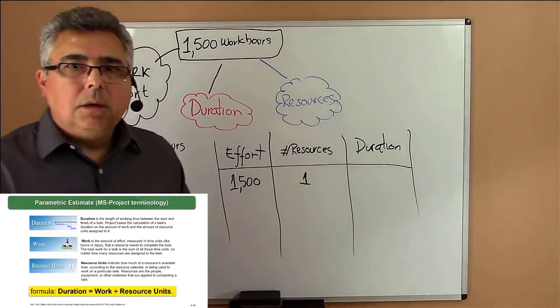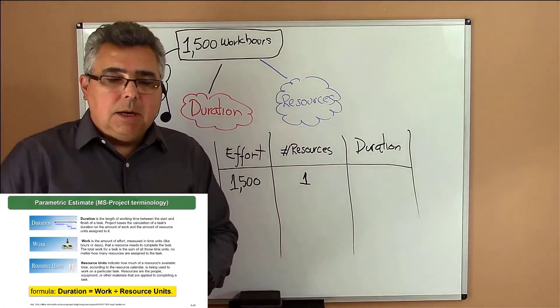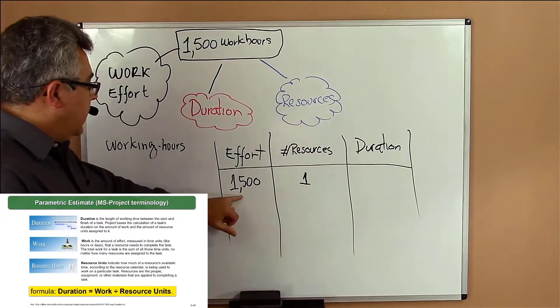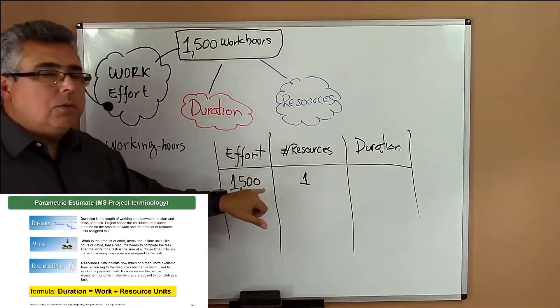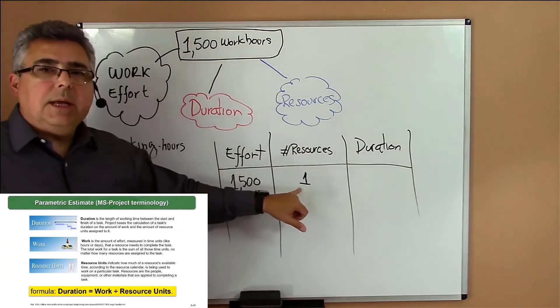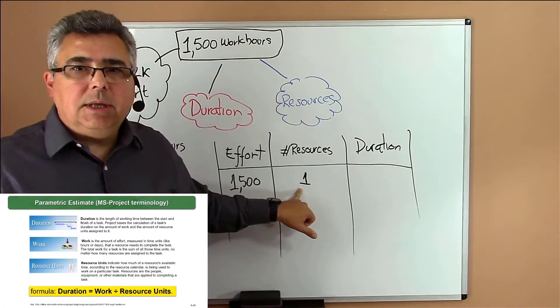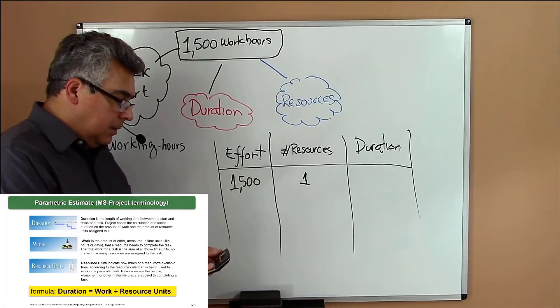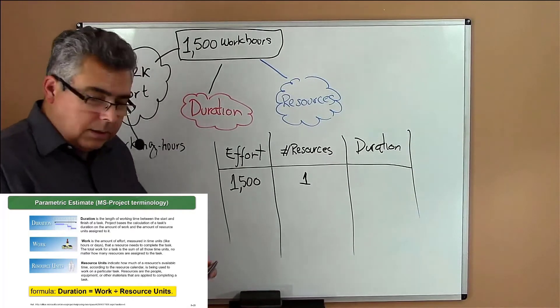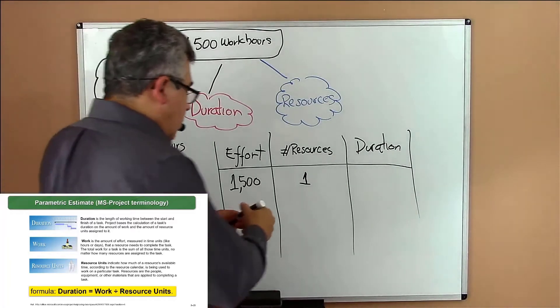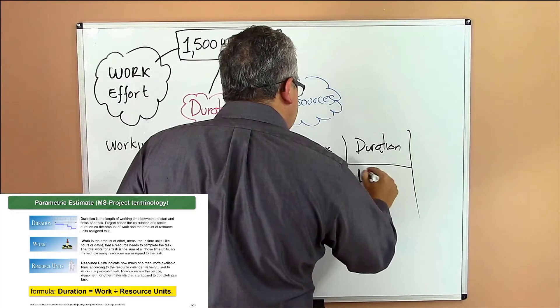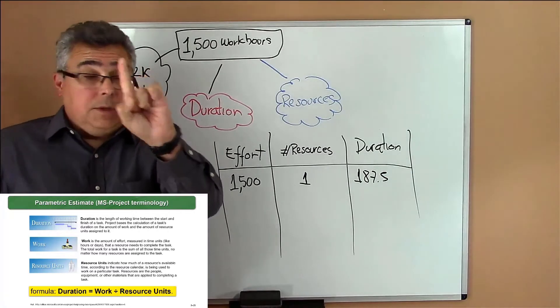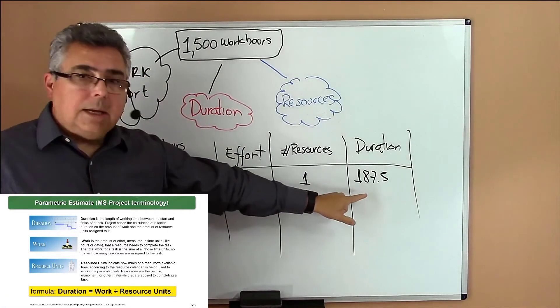How many days do we need to complete the task? So I need my effort is working hours. 1500 working hours. Let's suppose that that resource works eight hours a day. So if I take 1500 divided by eight, I will need 187 days and a half. So the duration, if I just have one resource, that's the duration of the task.